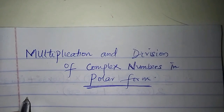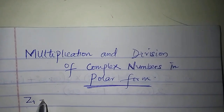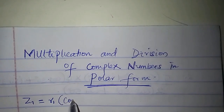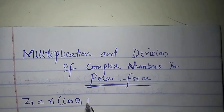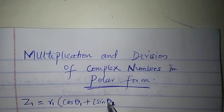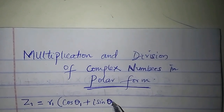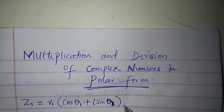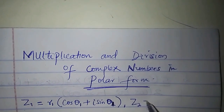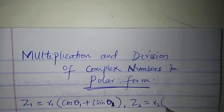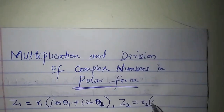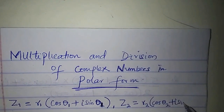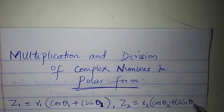I have two complex numbers: z1 equal to r1 times (cos θ1 + i sin θ1), and z2 equal to r2 times (cos θ2 + i sin θ2).